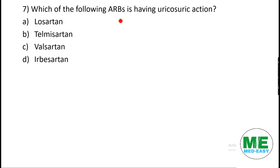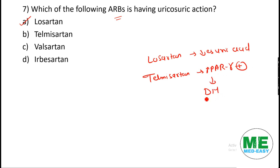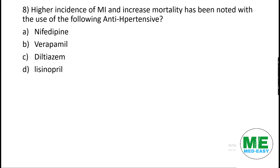Next MCQ: which of the following ARBs (angiotensin receptor blockers) has a uricosuric effect? The answer is losartan — it decreases uric acid levels in the blood. Additionally, telmisartan is a PPAR-gamma agonist, making it useful in patients with diabetes mellitus. These are important properties to remember regarding ARBs.